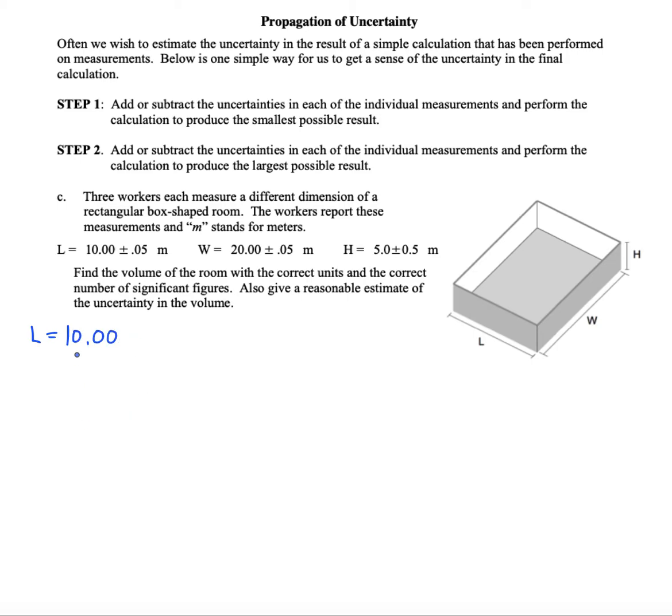So 10.00 is going to be my best estimate of the length of this box, 20.00 is the best estimate of the width, and the best estimate of the height is 5.0. The uncertainties can be given variables as well. We're going to use sigma L to represent the uncertainty in the length.